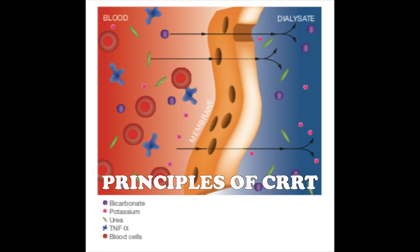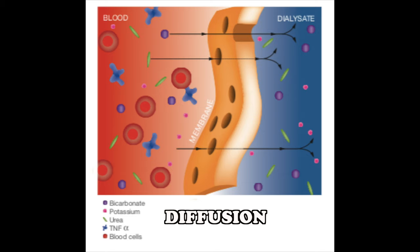Diffusion is the movement of solutes through a semi-permeable membrane from an area of higher concentration to an area of lower concentration until equilibrium has been established. In CRRT, diffusion occurs when blood flows on one side of the membrane and dialysate solution flows counter-current on the other side. The dialysate is not mixed with the blood. Diffusion is efficient for removing small molecules but not large molecules, and molecular size and membrane type can affect clearances. Diffusion occurs during hemodialysis.